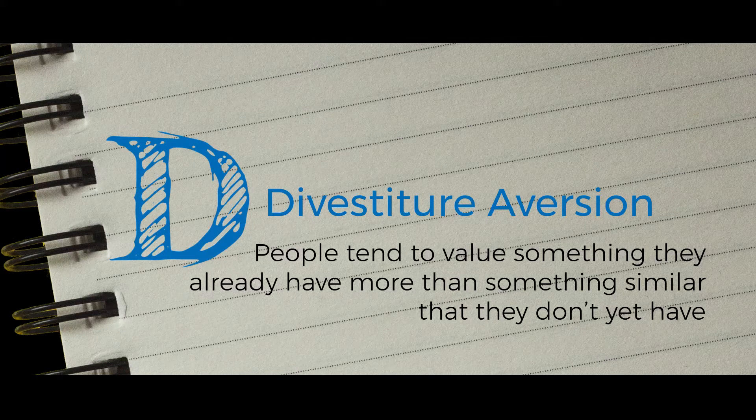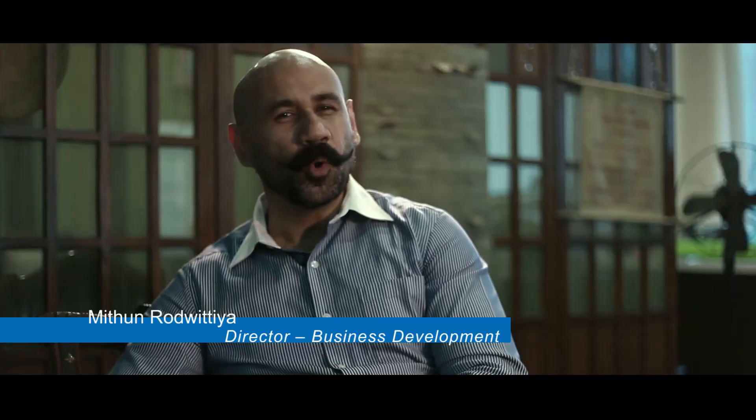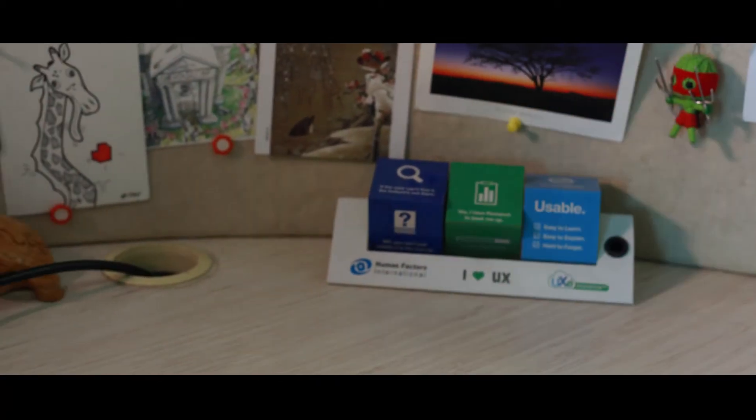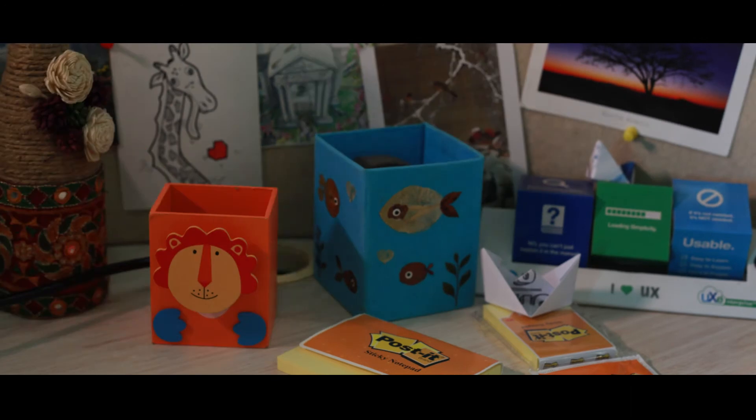D for Divestiture Aversion. The moment we choose something and associate it with ourselves, it undergoes a transformation — its value for us is at once increased. This emotional bias is referred to as divestiture aversion. It is the reason that some people have lofts, storage spaces, and garages filled with junk that they cannot bear to throw away.